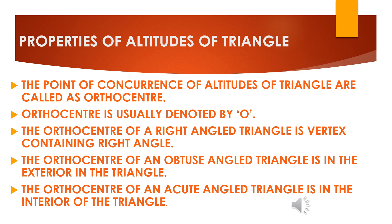Next, the orthocentre of an obtuse angle triangle is in the exterior of the triangle, meaning it will be outside the triangle. Obtuse means one of the angles is more than 90 degrees; in such a case the orthocentre will lie outside the triangle. The orthocentre of an acute angle triangle is in the interior, meaning inside the triangle. So the position of the orthocentre changes according to the type of the triangle.